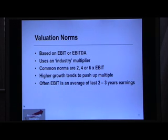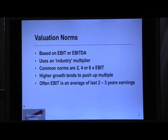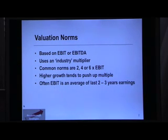Firstly, the EBIT multiple is a norm. It's used across many industries as the default valuation method. It's very common to see EBIT norms of 2, 4, and 6. I've often talked to entrepreneurs about their industries and what the norm is, and you do get this spread between different multiples — but most of them can't understand why that particular multiple applies in their industry, or how they might move, for example, from a 4 to a 6.